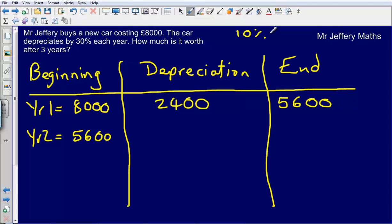So first of all, 10% is going to be £560, simply dividing by 10 there. Then 30% will be just £560 multiplied by 3. So my 30% this time round will be £1,680. So my depreciation is £1,680.